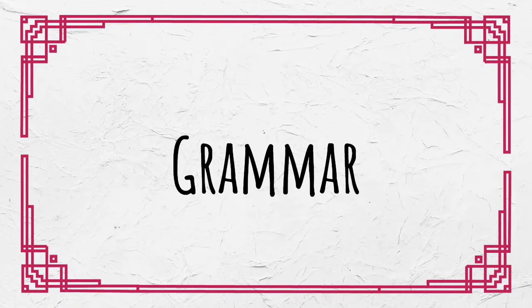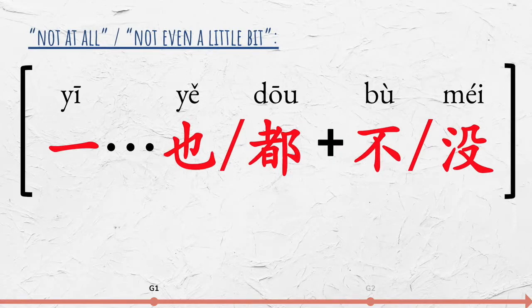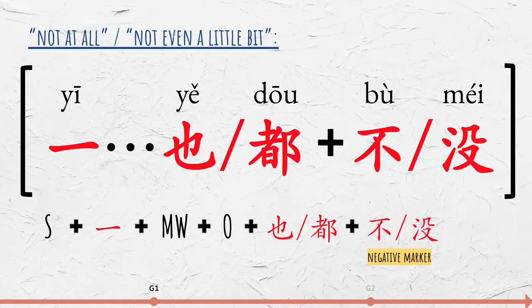Now let's move on to the grammar. To express 'not at all' or 'not even a little bit,' use this structure: Subject plus 一 plus measure word plus object plus 也 or 都 plus a negative marker 不 or 没 plus the verb phrase.